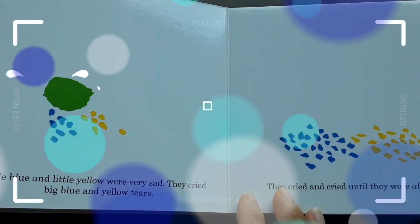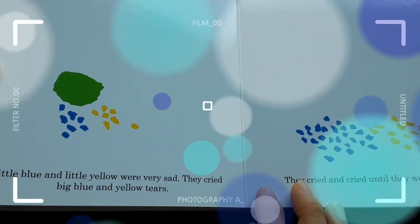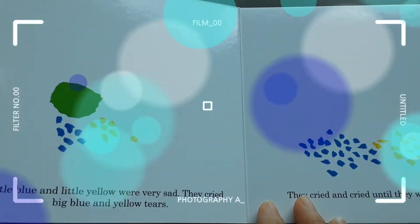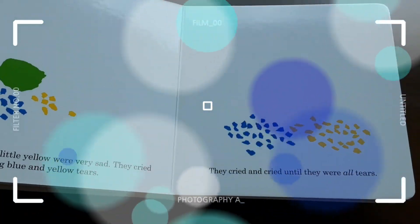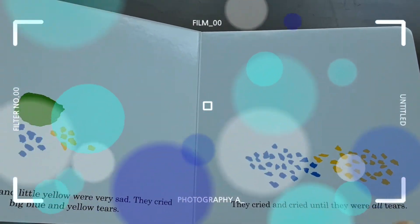Little Blue and Little Yellow were very sad. They cried big blue and yellow tears. They cried and cried until they were all tears.